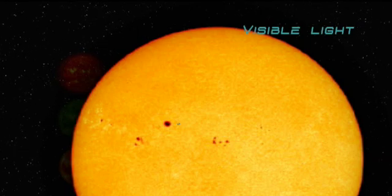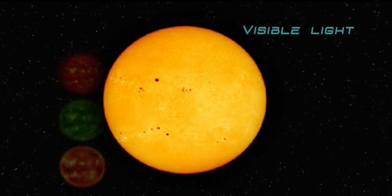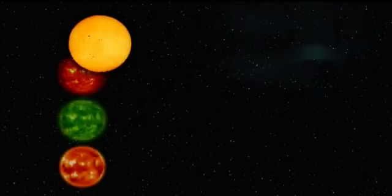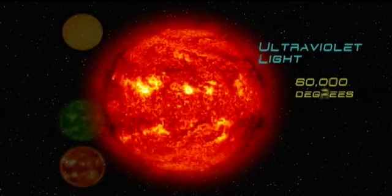The yellow sunlight we see comes from the outer parts of the star, which has a temperature of about 10,000 degrees Fahrenheit. But some areas of the sun's atmosphere are much hotter, and they can only be seen in ultraviolet or X-ray light.